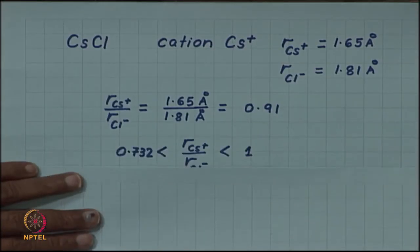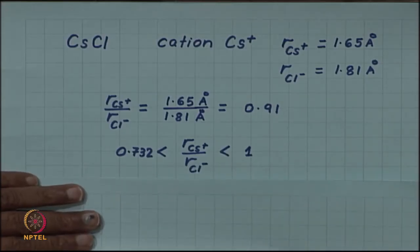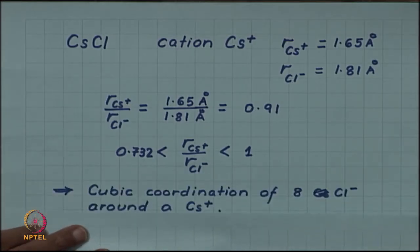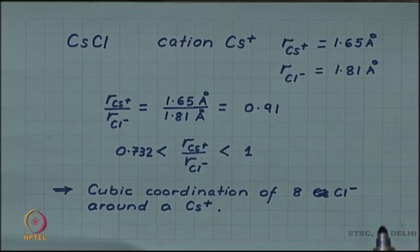This radius ratio, if you look at your radius ratio table, fits between 0.732 and 1. This ratio predicts a cubic coordination of 8 chloride ions around a caesium ion.